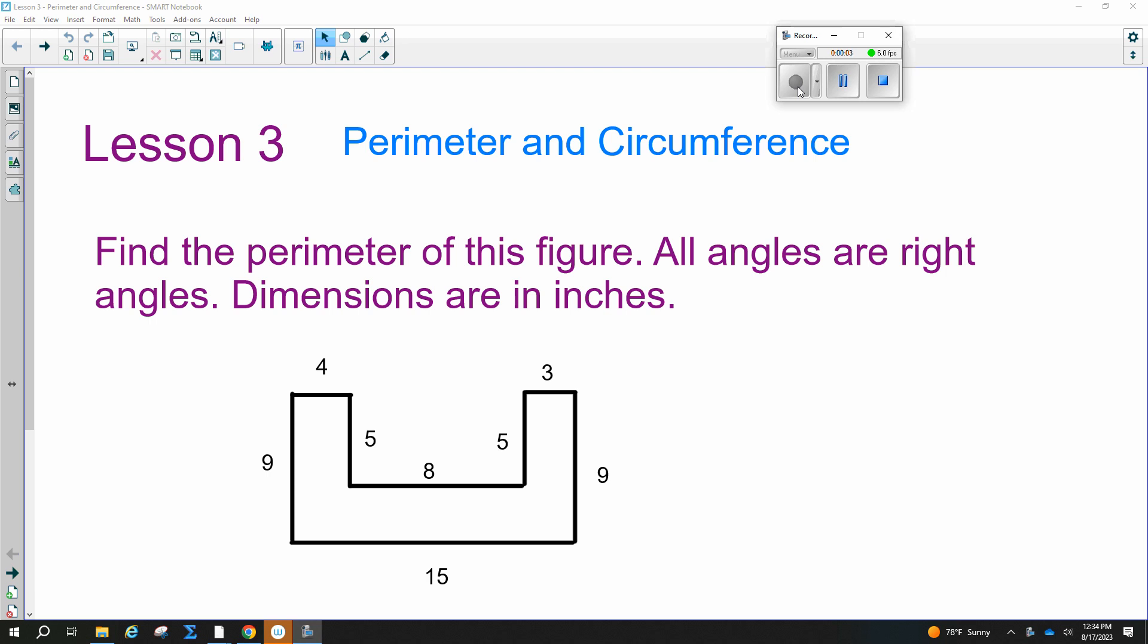Lesson three, perimeter and circumference. So perimeter is just the length of the total outside, right? You're walking around the figure and you're going to add it all up.